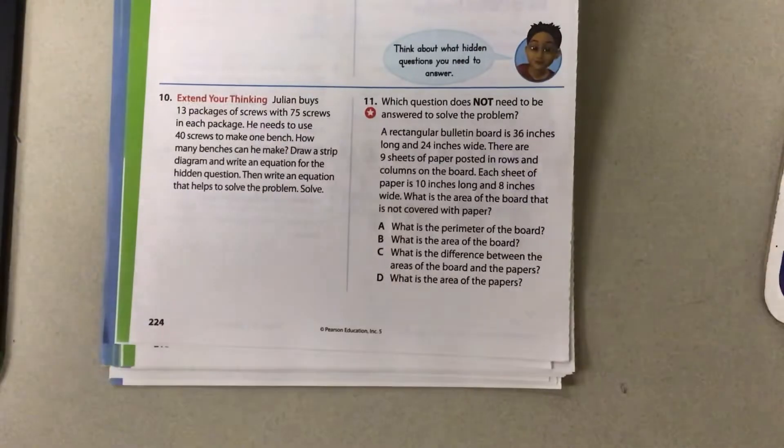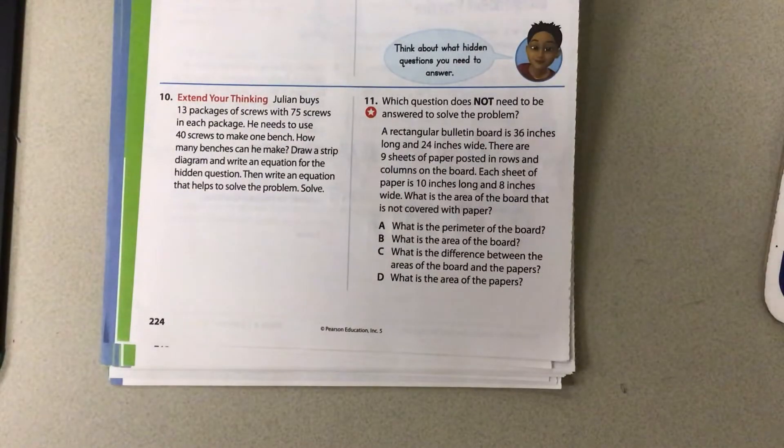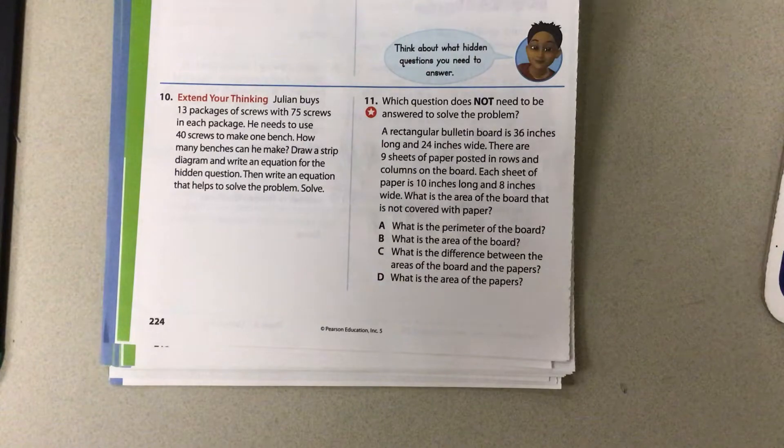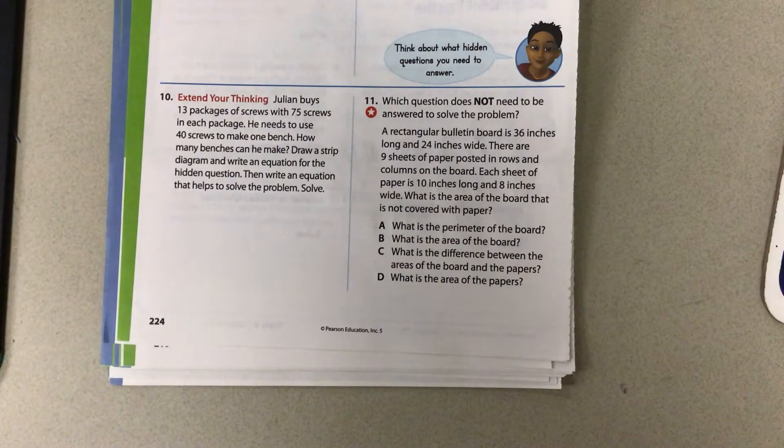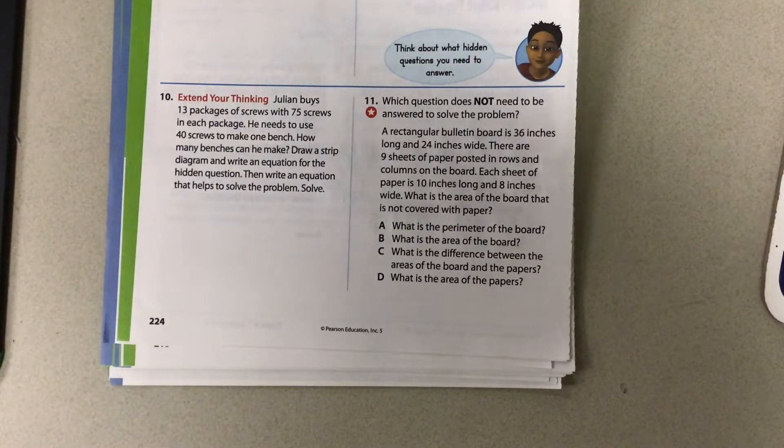Let's see. Let's do this last one here. Which question does not need to be answered to solve the problem? A rectangular bulletin board is 36 inches long and 24 inches wide. There are 9 sheets of paper posted in rows and columns on the board. Each sheet of paper is 10 inches long and 8 inches wide. What is the area of the board not covered with paper?